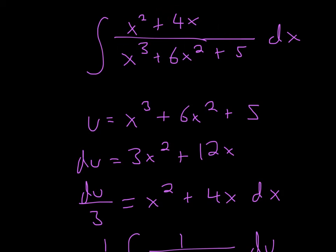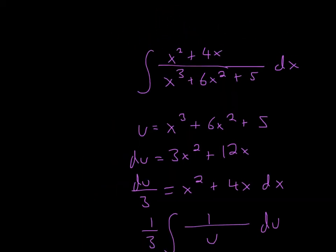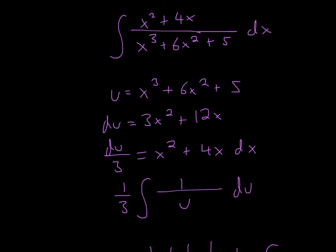So now we write this as a new integral. We represent everything in the old integral into the new one. So we said that x squared plus 4x dx is equal to du over 3, so that's the same as du, and then I'm just pulling out a 1 third. And then 1, because this goes away once we put 1 third du, and then u, which is x squared plus 6x squared plus 5.